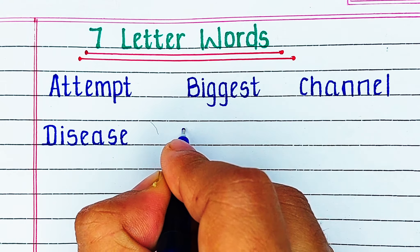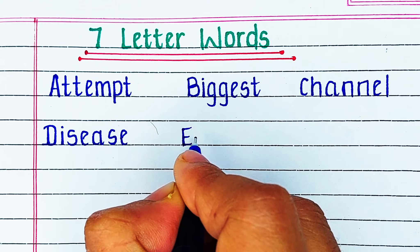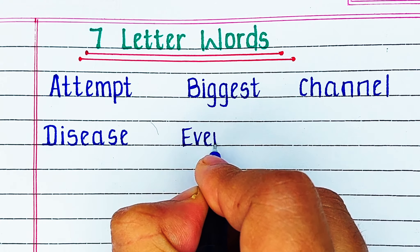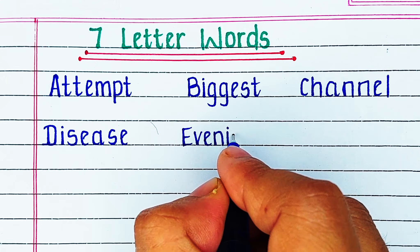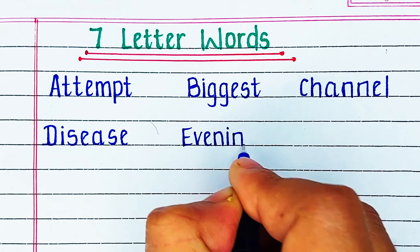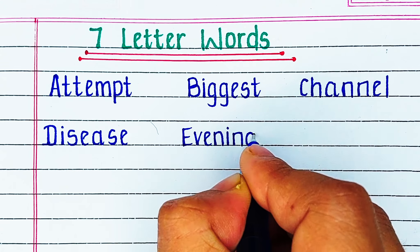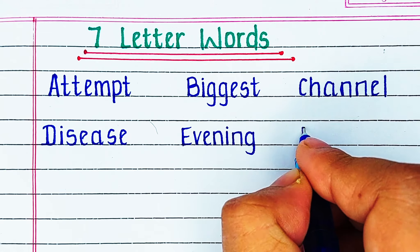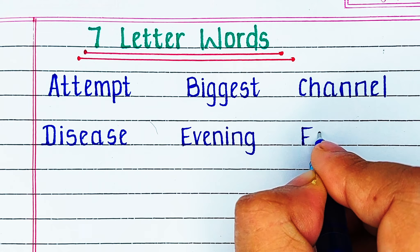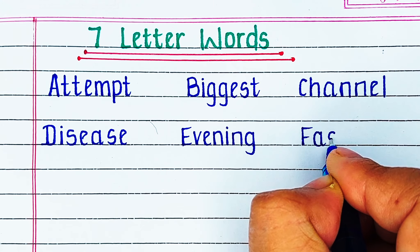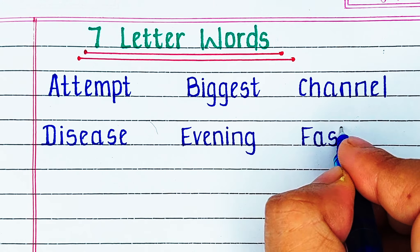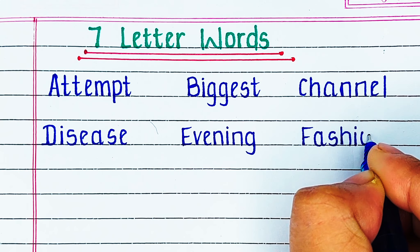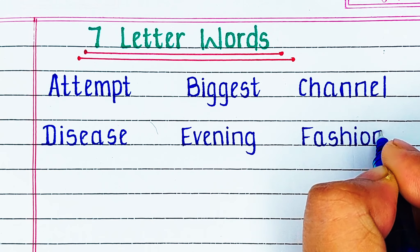Next is Alphabet E. The word is E V E N I N G, evening. Next is Alphabet F. The word is F A S H I O N, fashion.